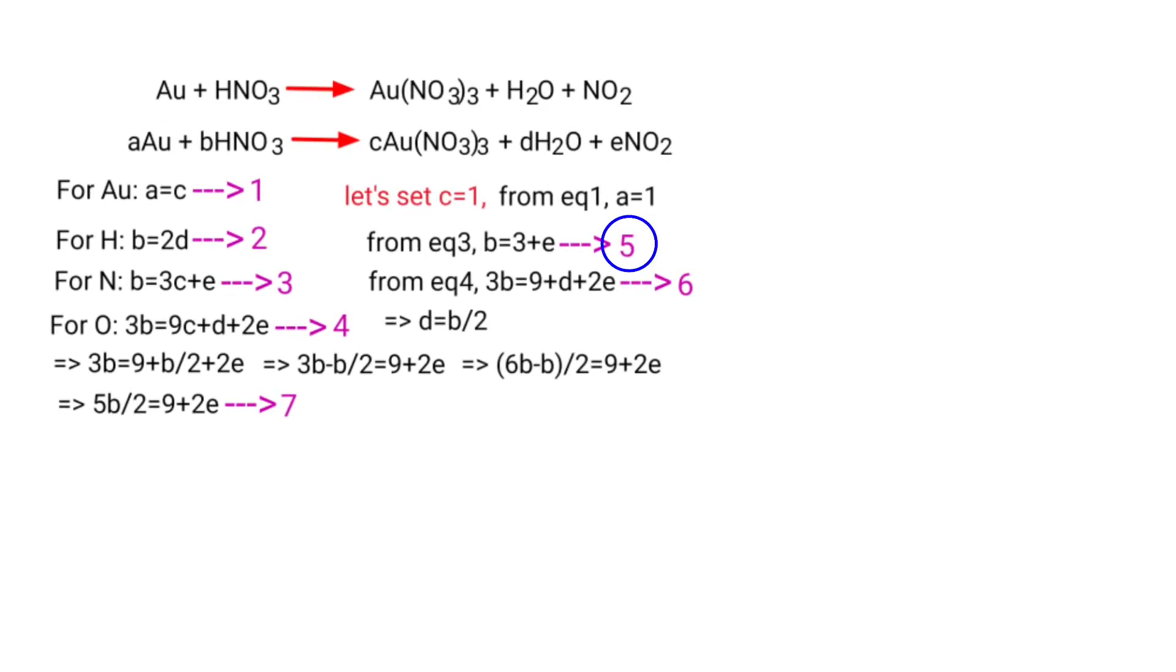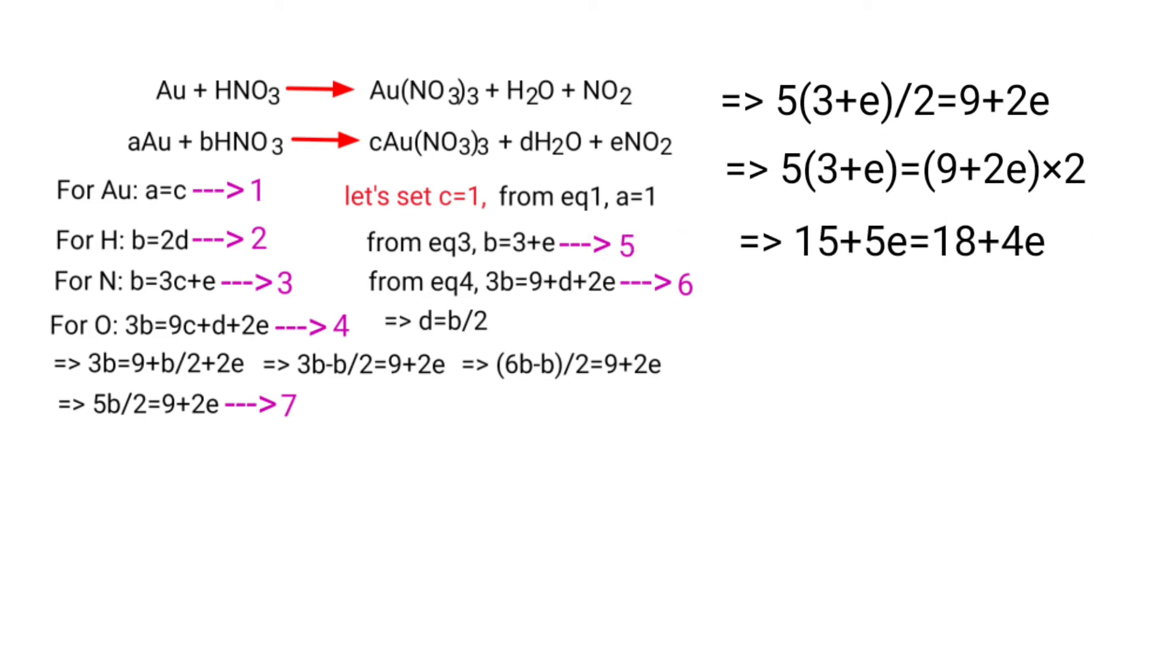Now you can apply equation 5 in equation 7. Then 5 times (3 plus e) divided by 2 equals 9 plus 2e. So 5 times (3 plus e) equals (9 plus 2e) times 2. Then 15 plus 5e equals 18 plus 4e. So 5e minus 4e equals 18 minus 15. Therefore e equals 3.